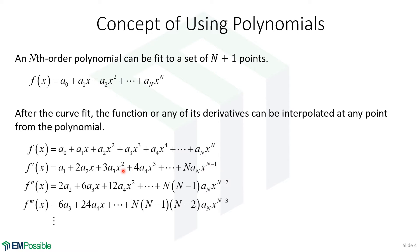If we take the derivative again, we can use those same polynomial coefficients to calculate a second-order derivative. Taking it again gives us a third-order derivative and so on. So if we have a bunch of discrete points, we fit those to a polynomial and use that polynomial to estimate derivatives or even interpolate the function.